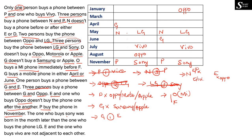The one who buys Sony was born in a month later than the one who buys LG — Sony has to come after LG. In both arrangements, Sony comes after LG, so this condition is satisfied and confirms we are on the right track. Next: E and the one who buys Vivo are not adjacent to each other — E and Vivo should not be immediately next to each other.